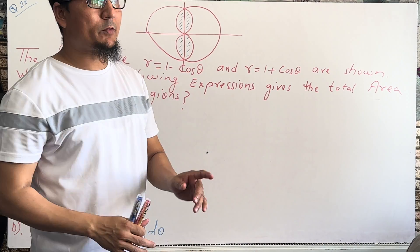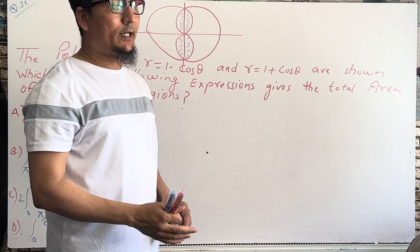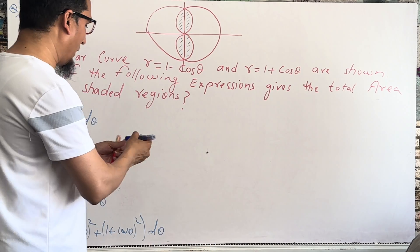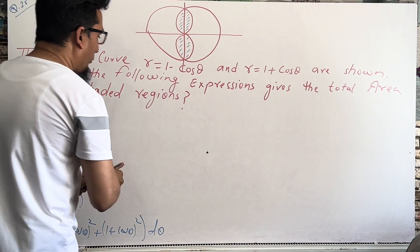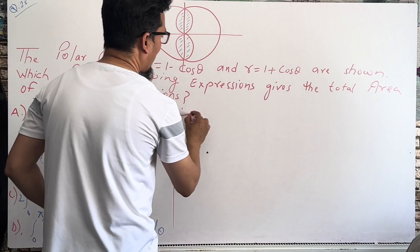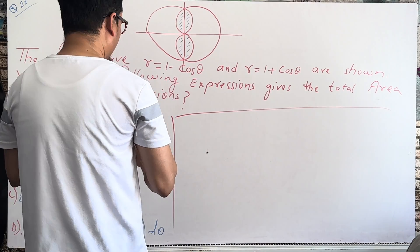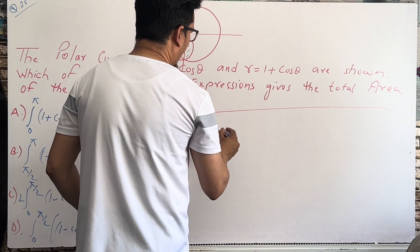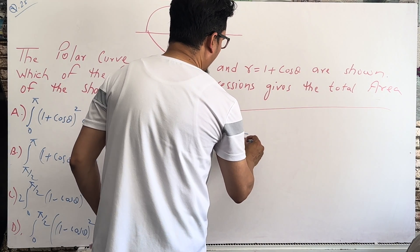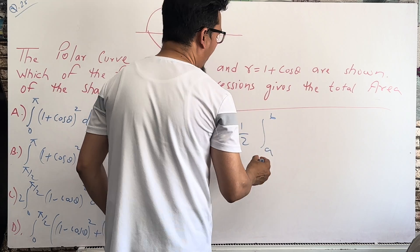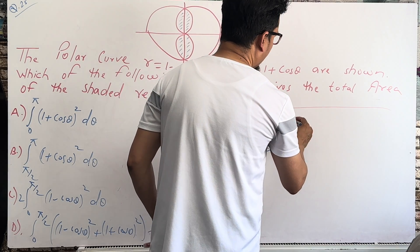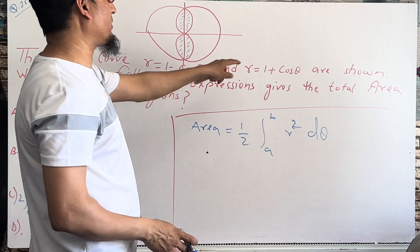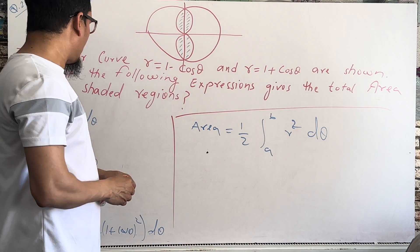I have a calculator on the laptop, so I will show you there and you can easily solve the question. First of all, I'm going to tell you how to find the area. The area formula is: Area = (1/2) ∫ from a to b of r² dθ, where r is expressed in terms of θ. Here r = 1 + cosθ.